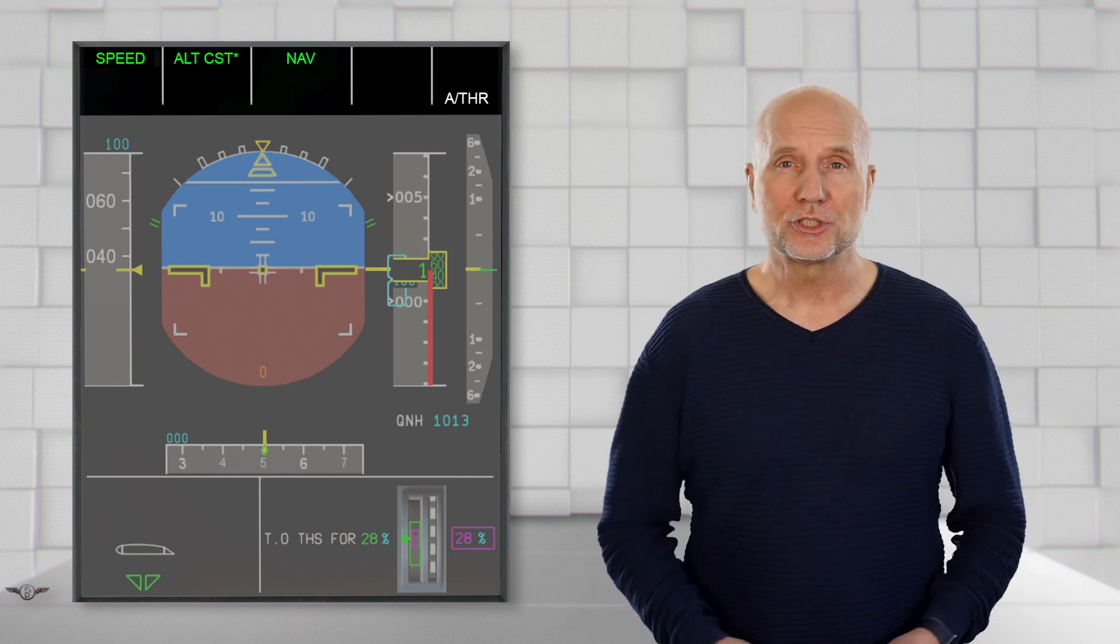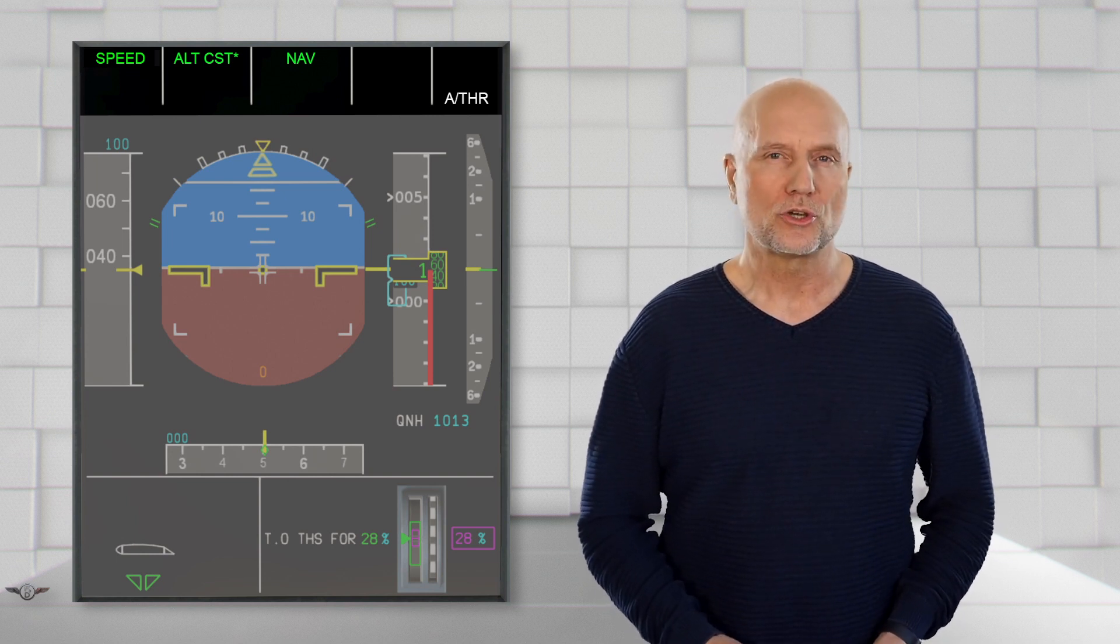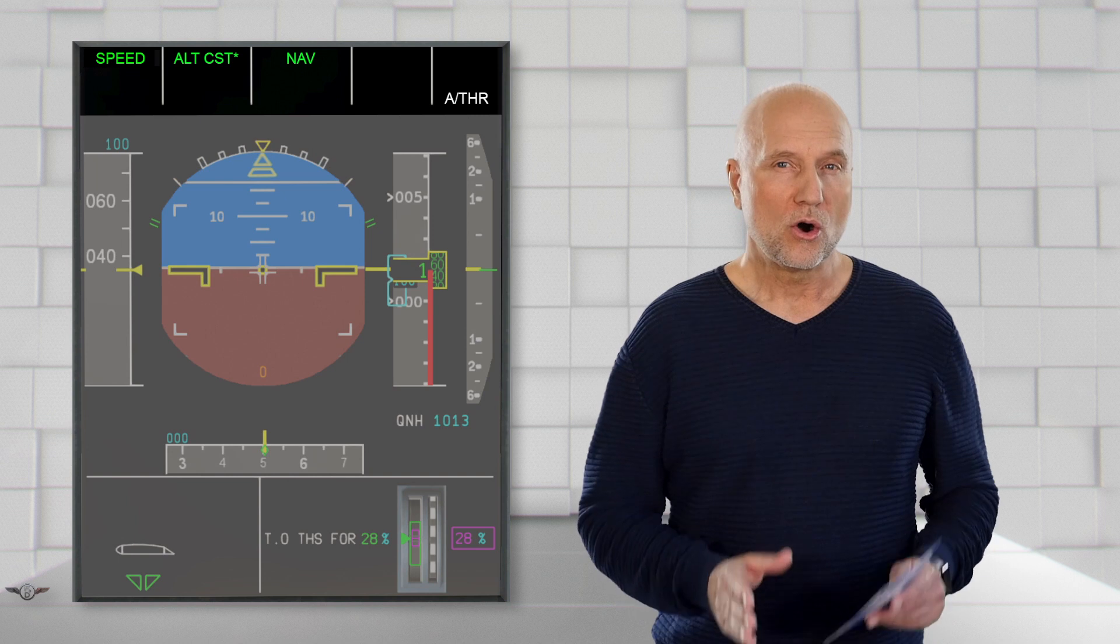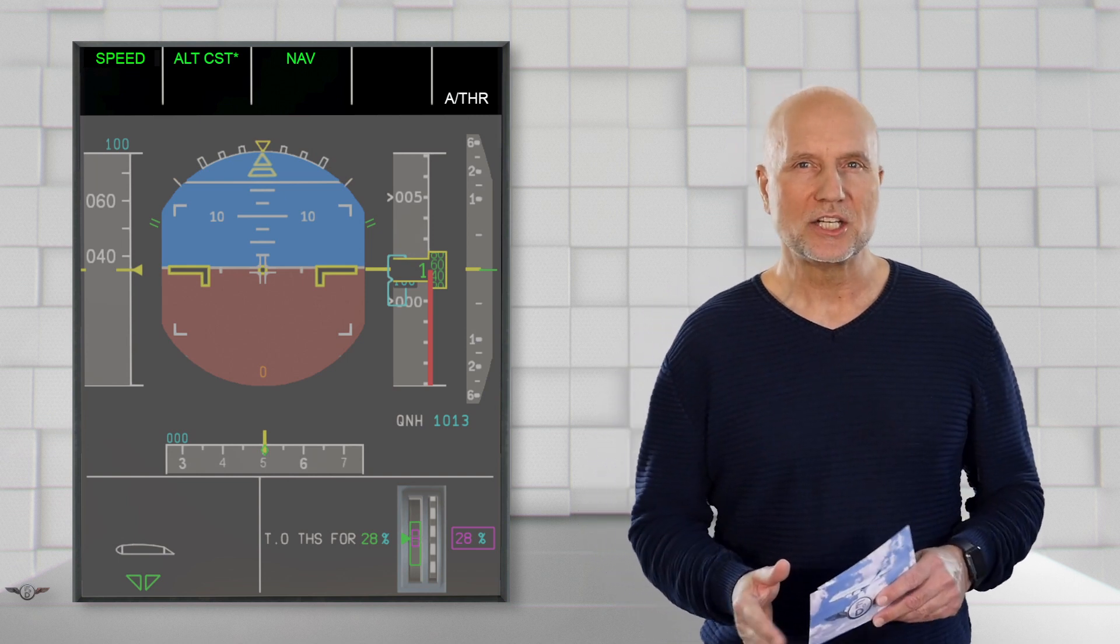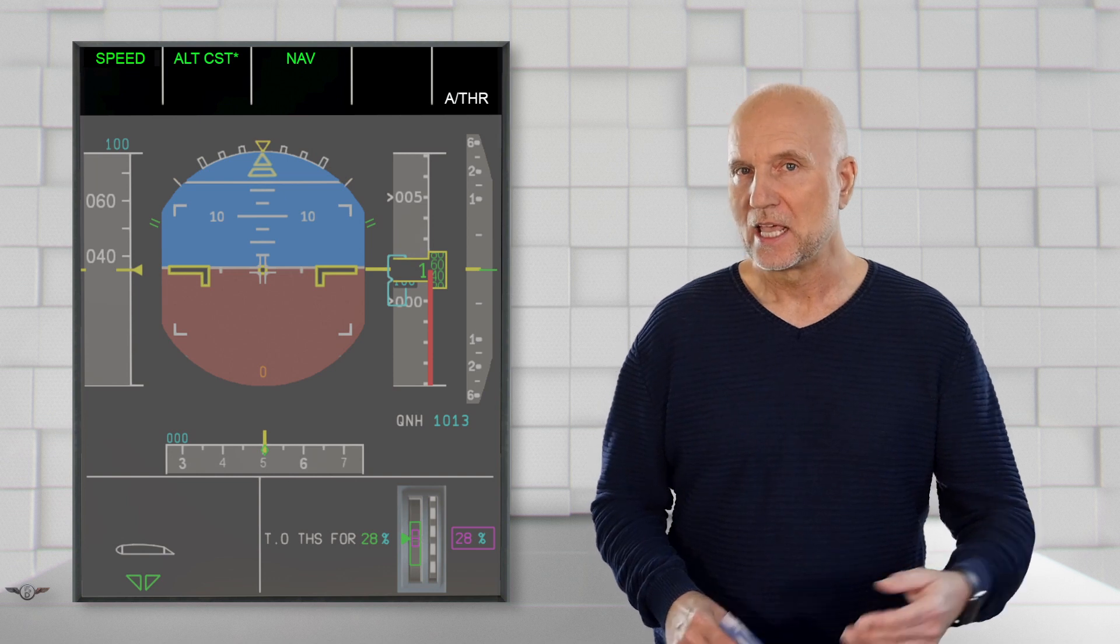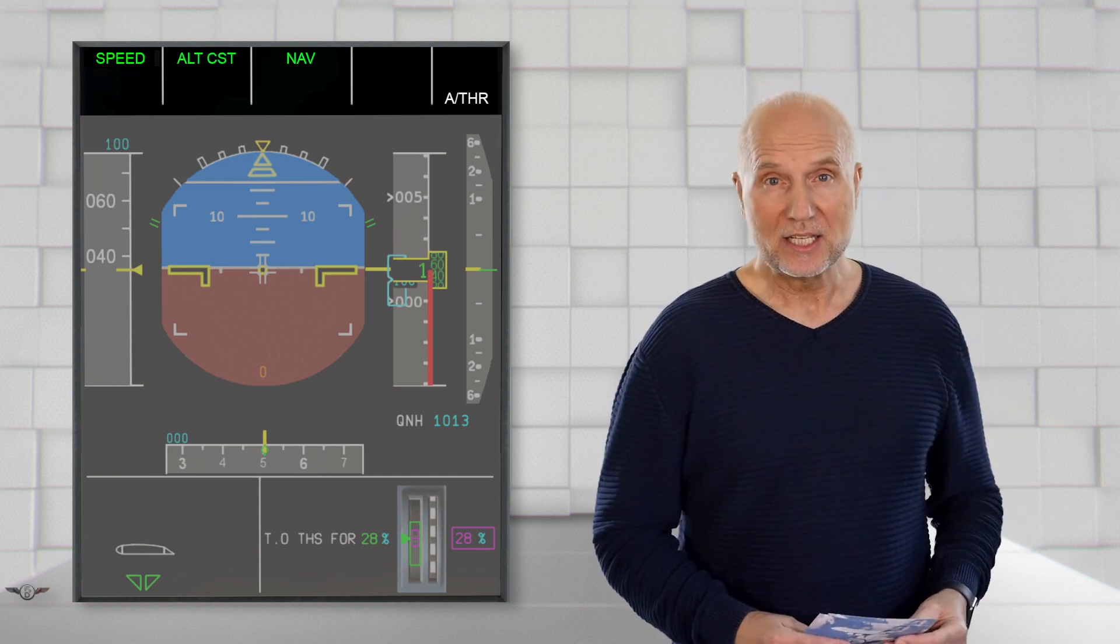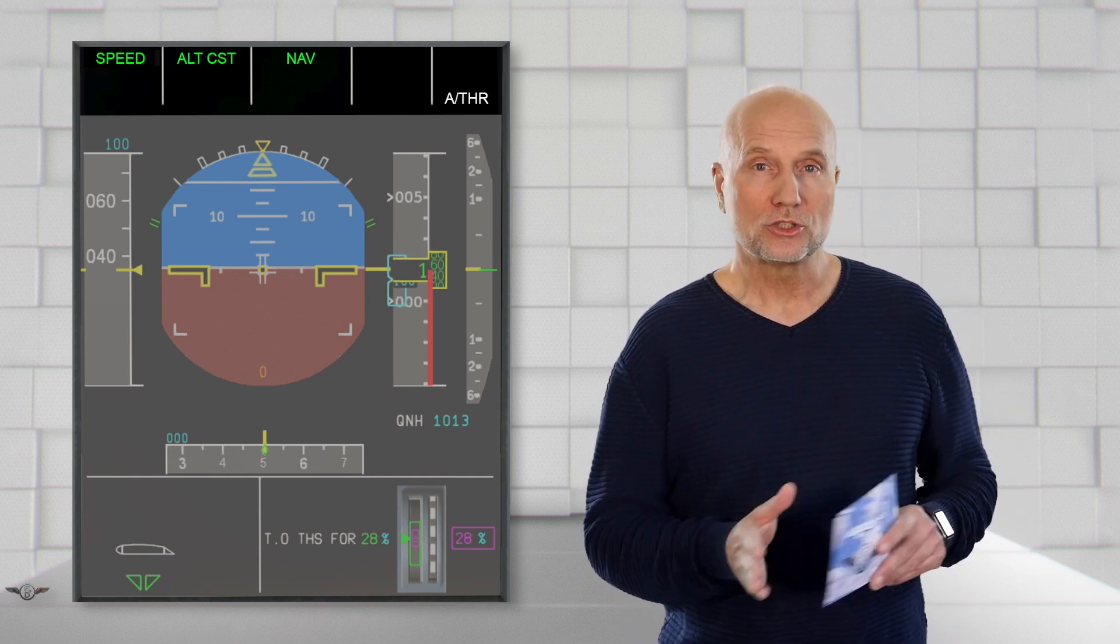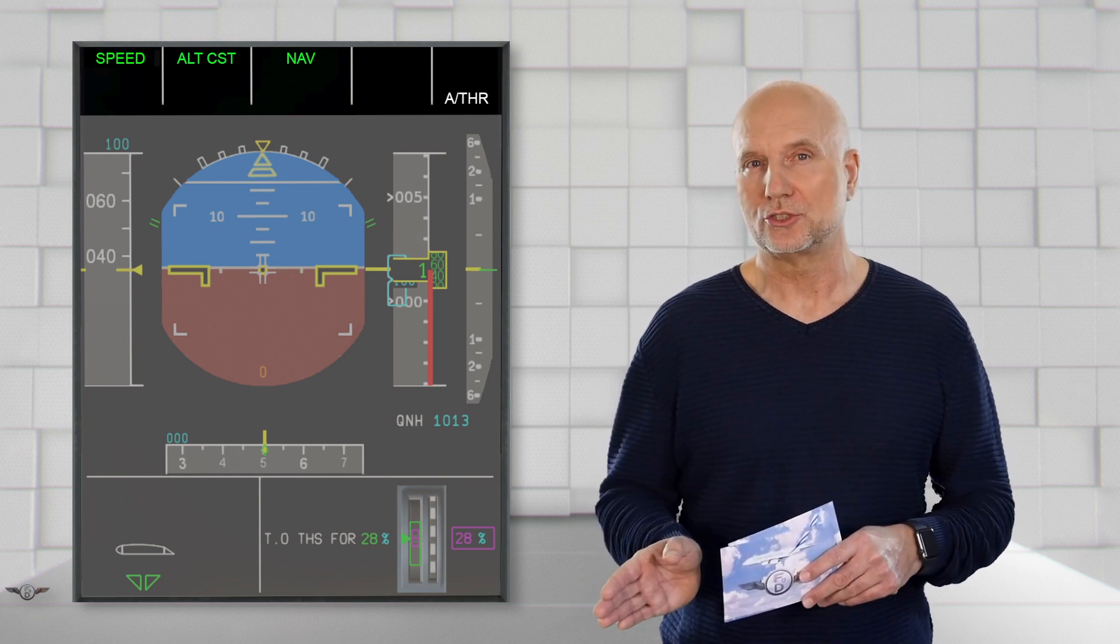ALT Constraint Star, again an acquire mode, in this case of ALT Constraint. Now ALT Constraint Star is engaged and captures the upcoming altitude constraint. With ALT Constraint displayed, the ALT Hold mode is engaged and holds the constraint altitude.